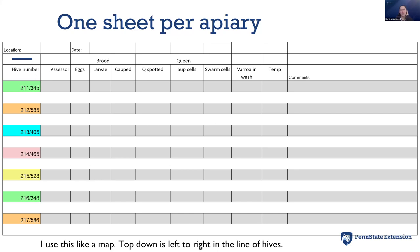Across the top of the data sheet we have the location and the date. If you have multiple apiaries, you'll need to write down the location. Then it's simply a series of boxes where you're going to put an X, a checkmark, or a number, and at the end you can write comments about that hive.